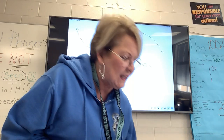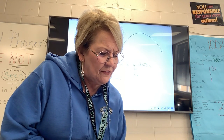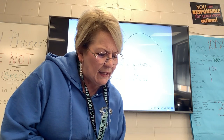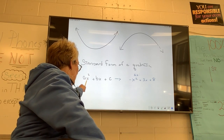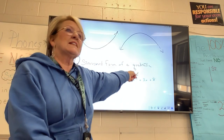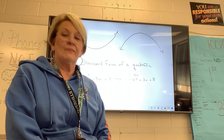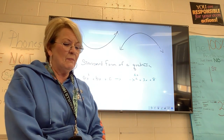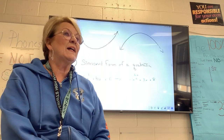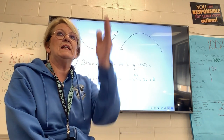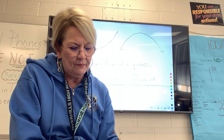So we always have A equals, B equals, and C equals. With this example — if I have negative X squared plus 3X plus 8 — A is whatever number is sitting in front of the X squared. What number is sitting in front of X squared? Negative 1. So my A is negative 1. What's sitting in front of the X? 3. That's my B. And the number at the end that has no variable is your C, in this case 8. That's how you identify your A, B, and C — it has to be in standard form.